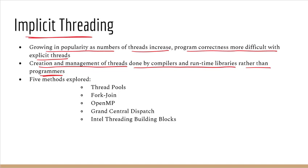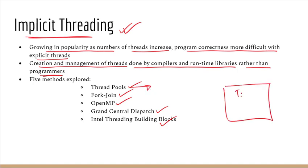In implicit threading, the creation and management of threads is done by the compiler and runtime libraries rather than by the programmers. The programmer doesn't need to worry about threading; they just focus on the program or tasks. How to divide tasks into threads, how to create and run and manage threads — all those things are handled by implicit threading. Methods available include thread pool, OpenMP, Grand Central Dispatch, and Threading Building Blocks.